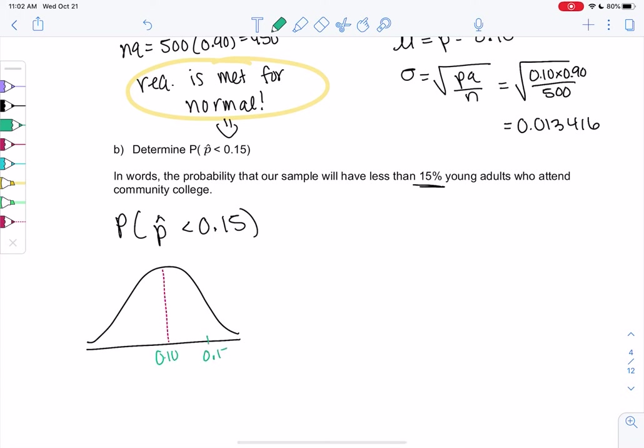So 0.10 is in the middle. So 0.15 is somewhere to the right. And we want to prove less, we want to find less than, so I'll show you to the left for less than.